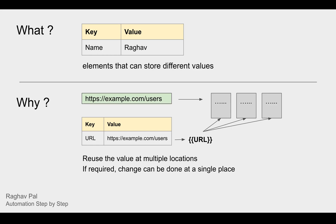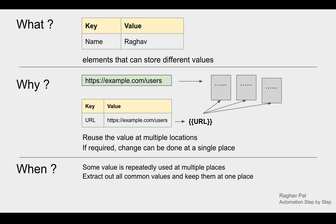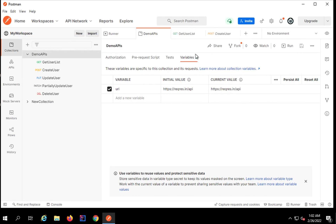Now when do we need variables? Whenever there are common values or repeated values in your tests or scripts, it is always good to keep those values in variables at a single location so you can reuse them and only need to change them in one place. Also, when you are using multiple environments, we can keep all environment-dependent parameters separately in variables so that we can always switch environments.